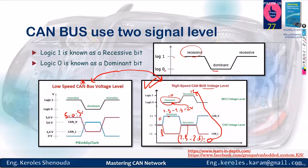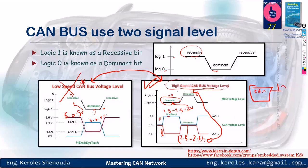When discussing the high-speed CAN bus, the principle revolves around high and low voltage states. To represent a logic zero or dominant state, CAN High should be at 3.5 volts and CAN Low at 1.5 volts — the difference is 2 volts, indicating a dominant state. If both CAN High and CAN Low are at 2.5 volts, subtracting them gives 0 volts, which is termed recessive and signifies a logic one.